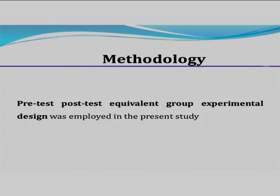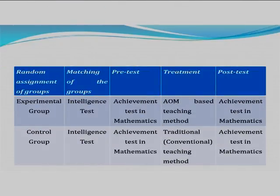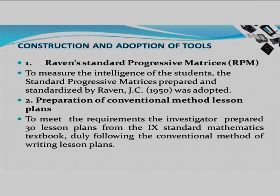To study this problem, a pre-test post-test equivalent group experimental design was employed. The methodological procedure involved first matching the groups using the intelligence test RPM, then conducting pre-test and post-test. The sample consisted of 120 students selected from Proddatur Town, with 60 students in the experimental group and 60 in the control group.